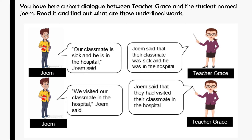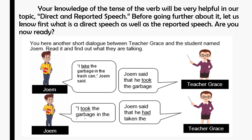Here is a short dialogue between Teacher Grace and a student named Jom. Read it and find out what the underlined words are. First, 'Our classmate is sick and he is in the hospital,' Jom said. Jom said that their classmate was sick and he was in the hospital. Second, 'We visited our classmate in the hospital.'